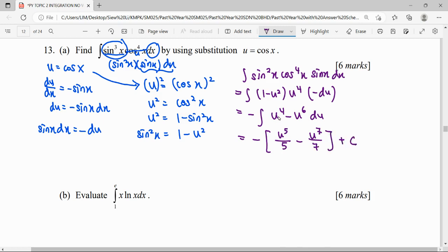Then plus c because this is an indefinite integral, so we have to plus a constant here. Lastly, we have to substitute back our u is equal to cos x. So here we simplify together with the negative: negative cos⁵x over 5, negative negative gives positive, so we get plus cos⁷x over 7 plus c.